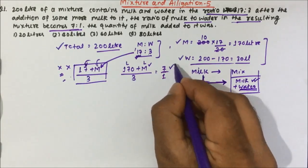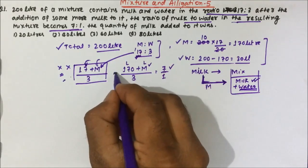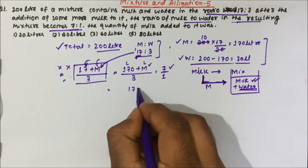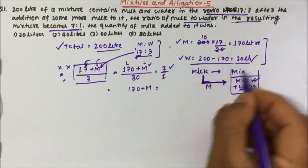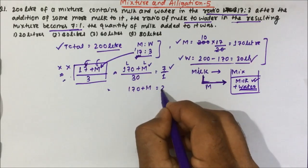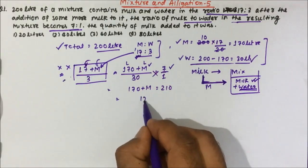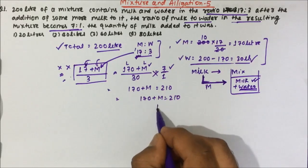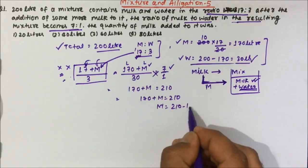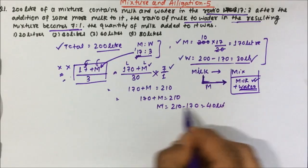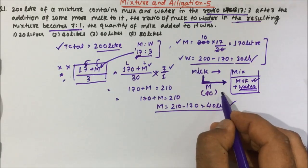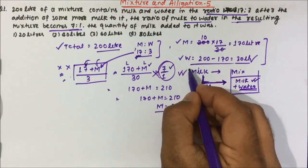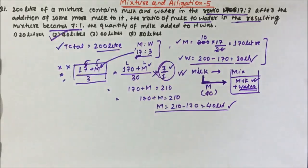When we add m liters of milk into 170 liters of milk, the resulting mixture becomes 7 is to 1. So 170 plus m divided by 30 equals 7 by 1. Cross multiplication gives 170 plus m equals 210, and m equals 210 minus 170, that is 40 liters. So 40 liters of milk we are adding, and because of that the milk and water ratio becomes 7 is to 1. So option B, 40 liters, is the correct answer.